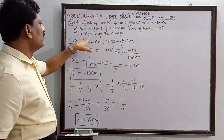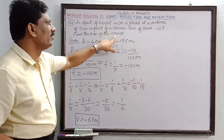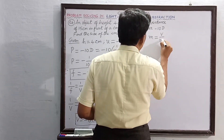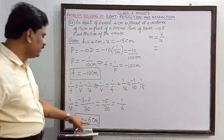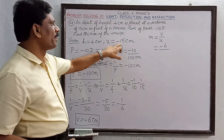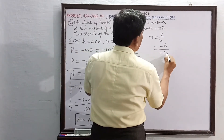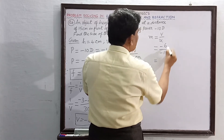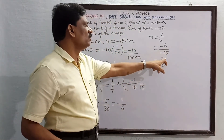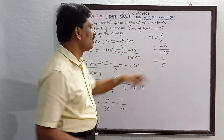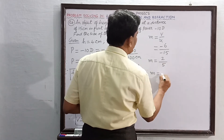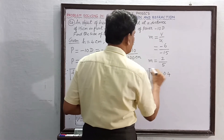To find the size of the image, we first find magnification. Magnification m equals v divided by u, which equals minus 6 divided by minus 15. The negatives cancel, giving 6 over 15, which simplifies to 2 by 5. Therefore m equals 2 by 5, that is plus 0.4.